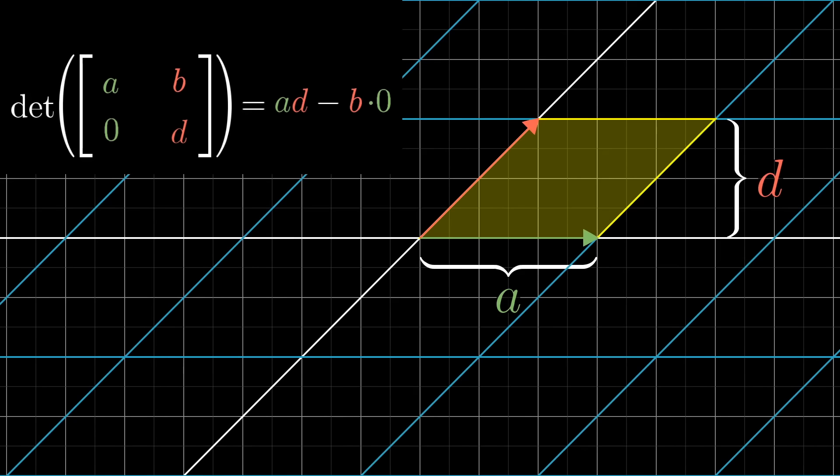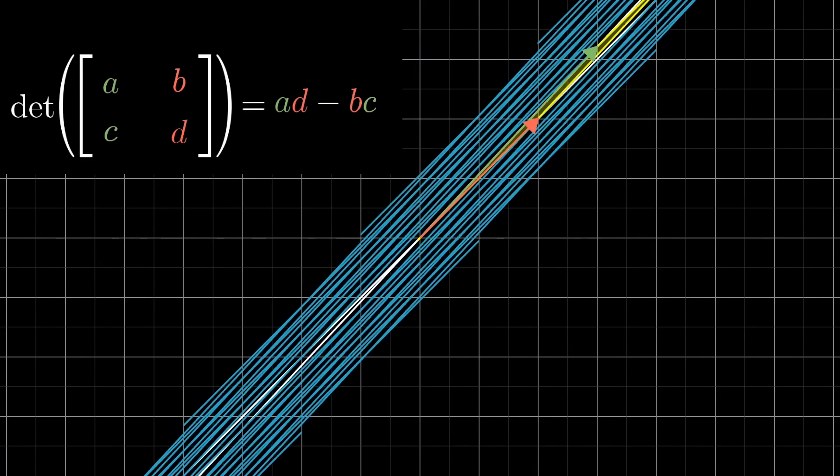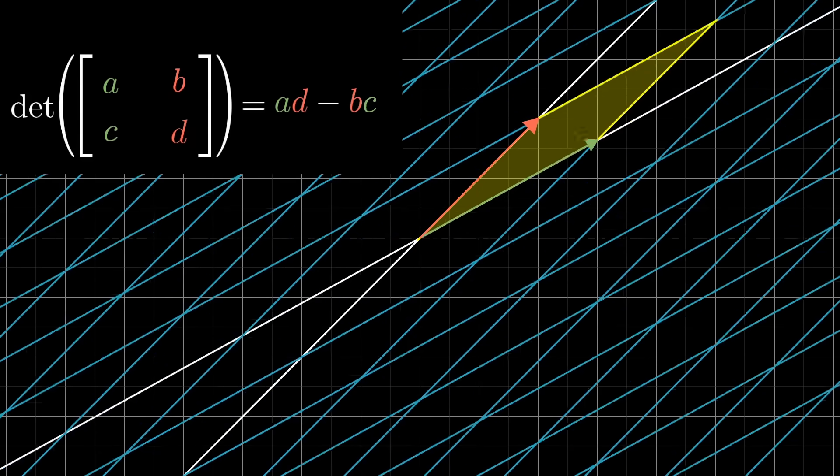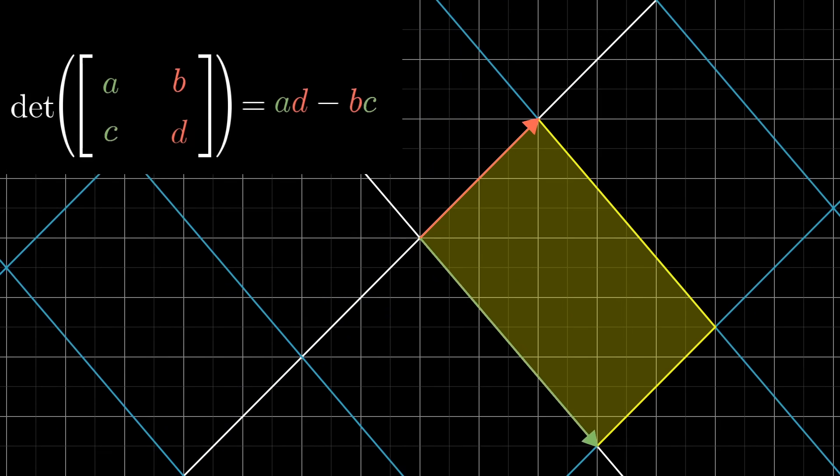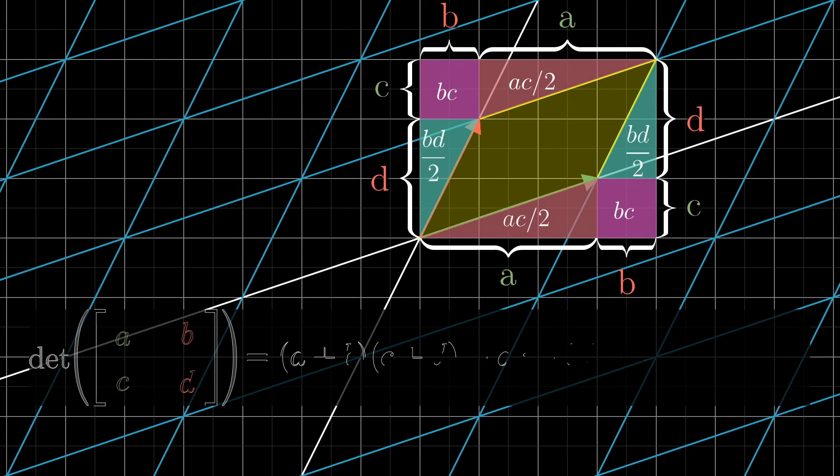Loosely speaking, if both B and C are non-zero, then that B times C term tells you how much this parallelogram is stretched or squished in the diagonal direction. For those of you hungry for a more precise description of this B times C term, here's a helpful diagram if you'd like to pause and ponder.